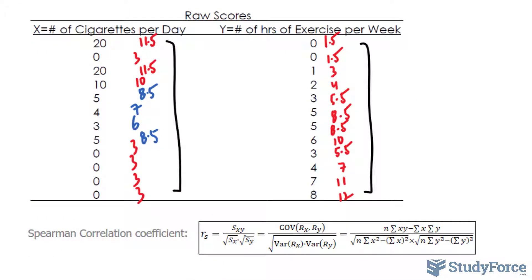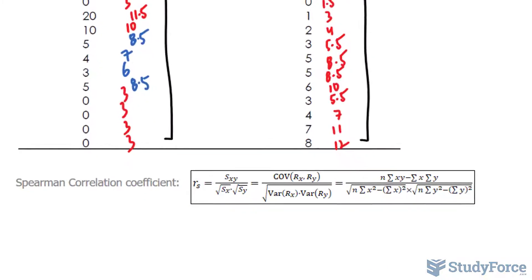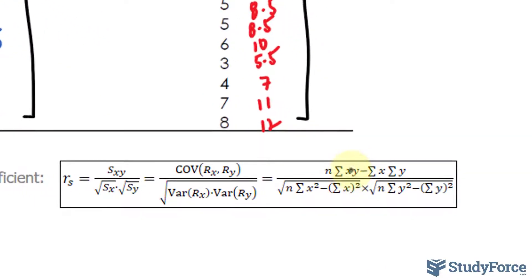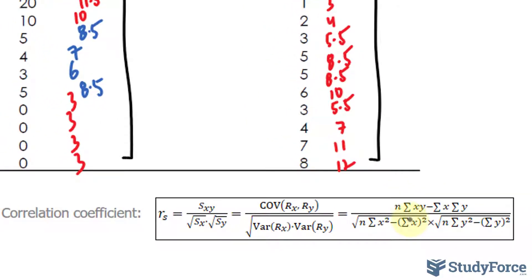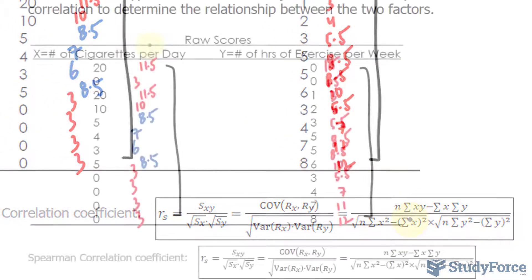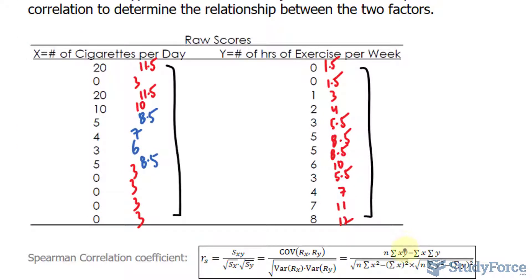Now that we have these values, we can actually start to focus in on this formula. Now there's a lot involved in this formula. Take a look. We have the sum of x times y, the sum of x, the sum of y, and so on. This means that we should find all of these individually and then substitute them into the formula.